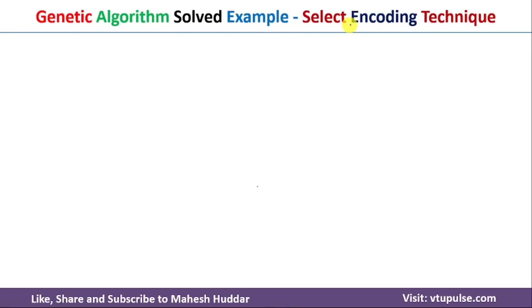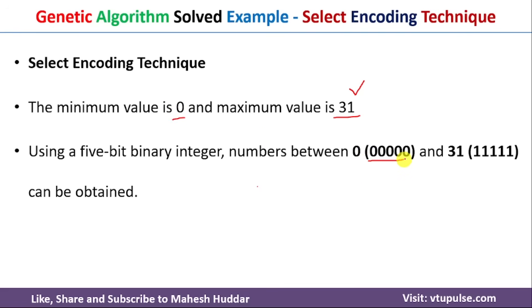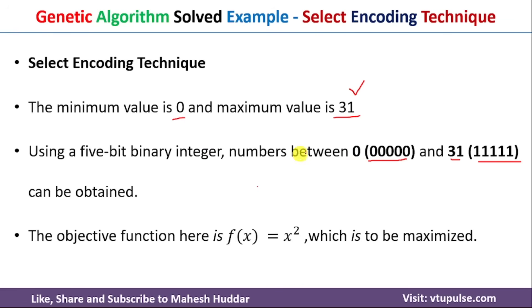The first step in genetic algorithm is to select an encoding technique to represent the solutions. The minimum value for x is 0 and the maximum is 31, so the solution lies between 0 and 31. I am going to use binary encoding. To represent 31 we need five ones, so we select five binary bits. Zero is represented as 00000 and 31 as 11111.